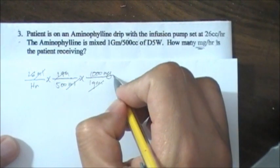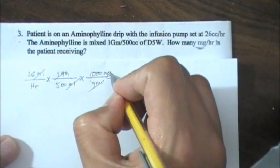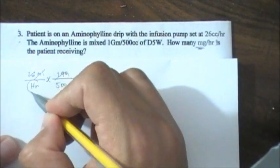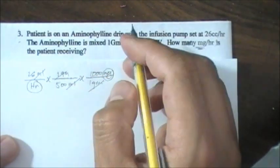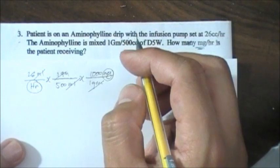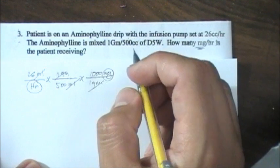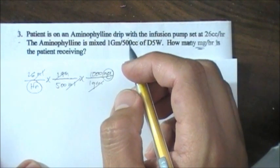Cancel 1 gram per gram and then you have milligram per hour. Basically you're almost done here because you already got what you're looking for, milligrams per hour. But hold on to your calculator first because we could cancel the zeros manually.